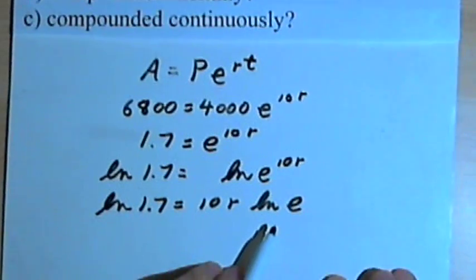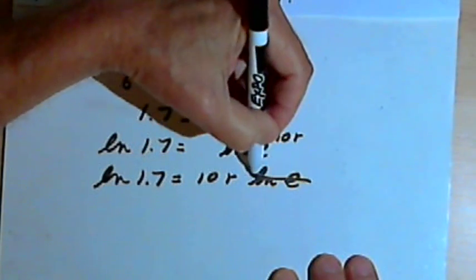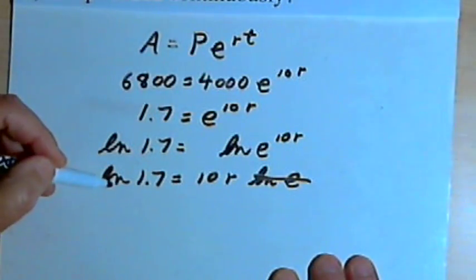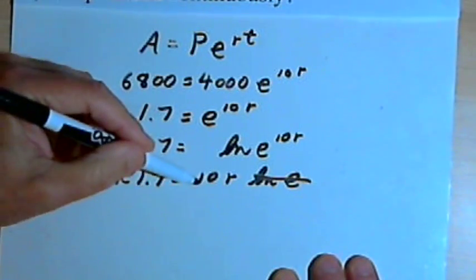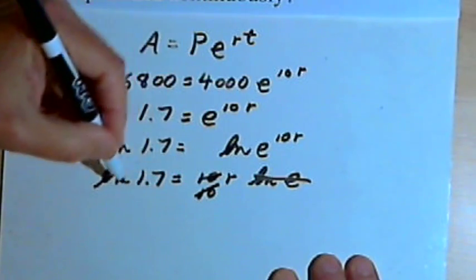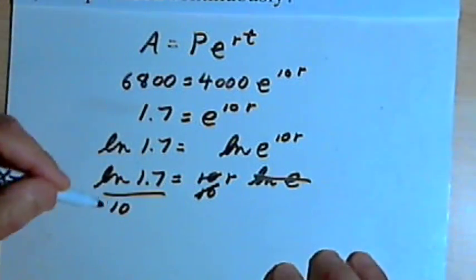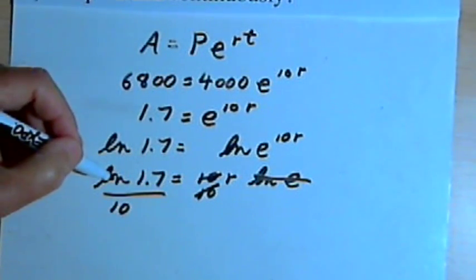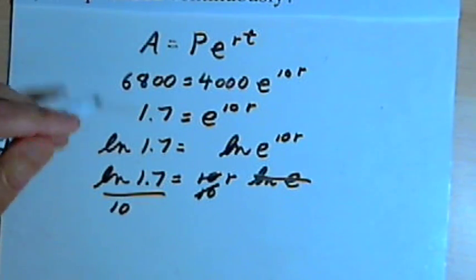So I have the natural log of 1.7 equals 10r times the natural log of e. But the natural log of e is just 1, so I can cross that out. The natural log of 1.7 equals 10r. I'll just divide both sides by 10, and I get the rate is the natural log of 1.7 divided by 10.